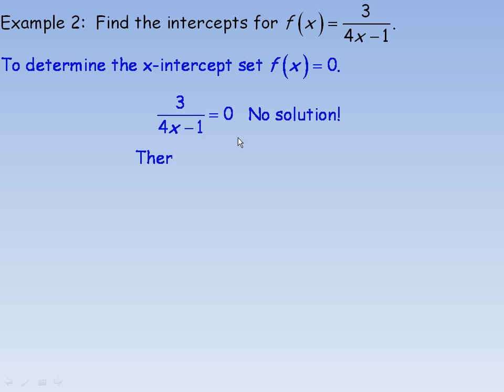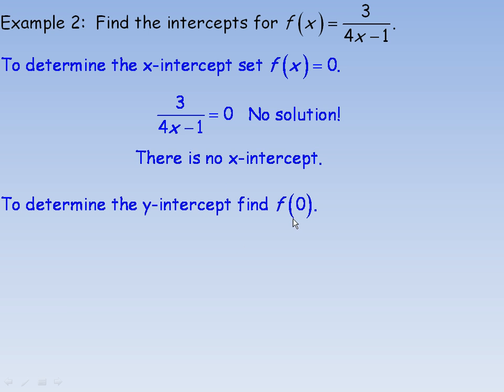There is, however, a y-intercept. We find the y-intercept by substituting 0 in place of x. Remember, to find any intercept, you always put 0 in place of the other variable. So we're going to find f of 0. Substituting 0 in place of x, we have 3 over 4 times 0 minus 1. This part is 0, but that's okay. So we still have 0 minus 1 in the denominator, so 3 divided by negative 1 is negative 3. So this function would have a y-intercept of negative 3.